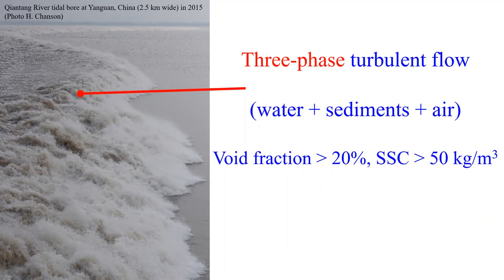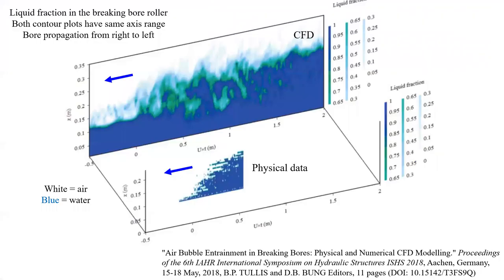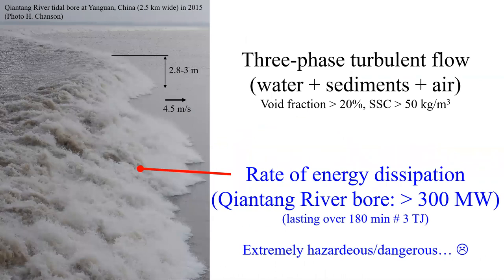We also have the problem that air is not uniformly distributed. These are observations in a breaking roller — physical data in the foreground, CFD data in the background — showing the distribution of air (white) and water (blue) within a breaking roller. It is a very difficult process. A breaking bore is also a very dissipative process. At the time of this photograph, based upon observations we undertook, the rate of energy dissipation was of the order of 300 megawatts — for a process lasting nearly three and a half hours that day, thus dissipating three terajoules.